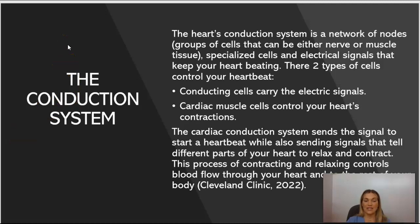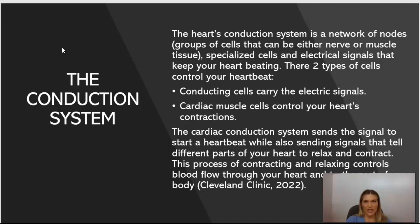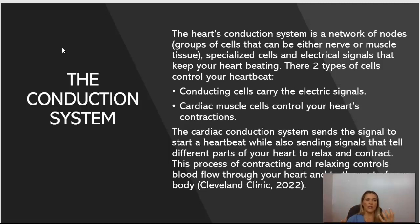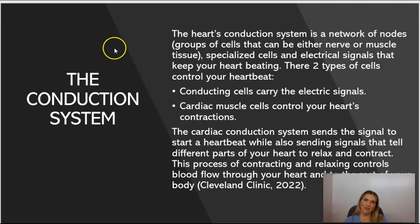The heart also has a conduction system — a network of nodes or groups of cells that can be nerve or muscle tissue. These specialized cells use electrical signals to keep your heart beating. There are two types of cells: conducting cells, which carry electrical signals, and cardiac muscle cells, which control the heart's contraction. The conducting cells spark the electrical signals, and the cardiac muscle cells control the actual contraction. The cardiac conduction system sends the signal to start a heartbeat while also signaling different parts of the heart to relax and contract, controlling blood flow through the heart to the rest of the body.